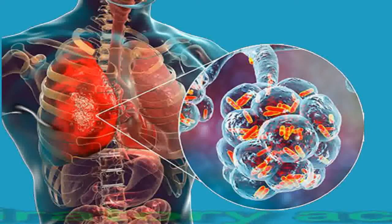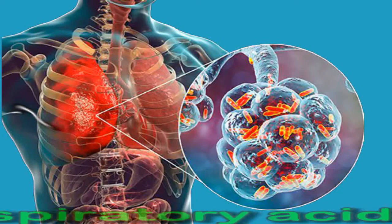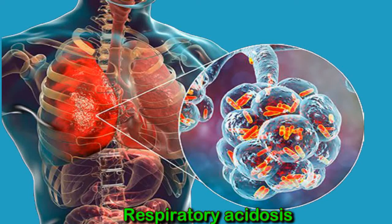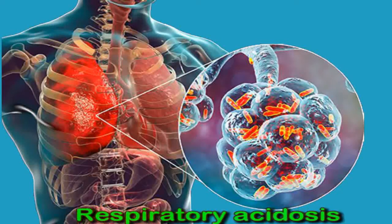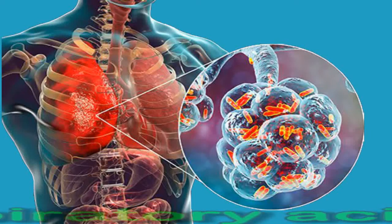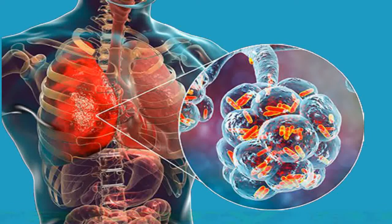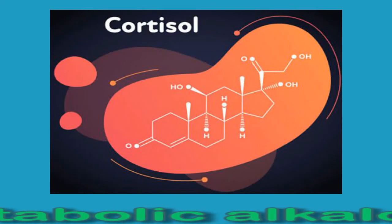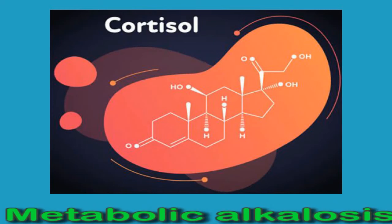Respiratory acidosis occurs due to conditions that make breathing difficult. These include lung conditions such as pneumonia or chronic obstructive pulmonary disease, congestive heart failure, severe obesity, myasthenia gravis, Guillain-Barré syndrome, and brain injury. Using drugs such as opiates can also lead to respiratory acidosis.